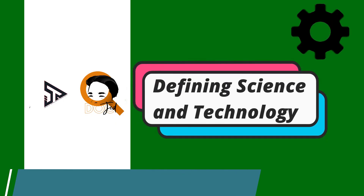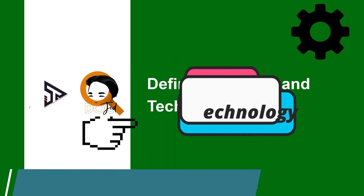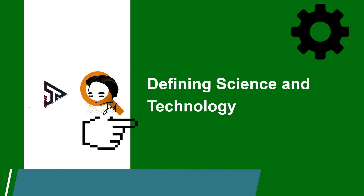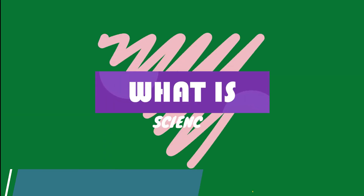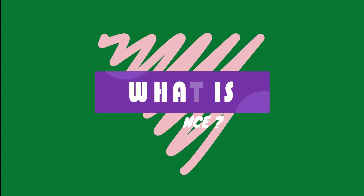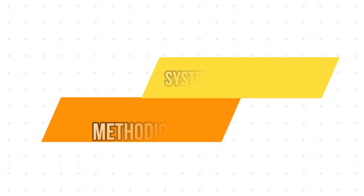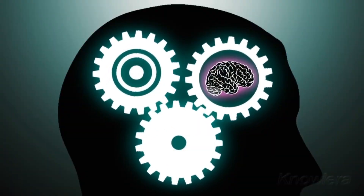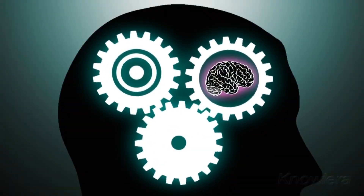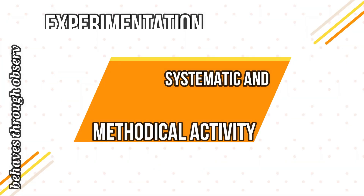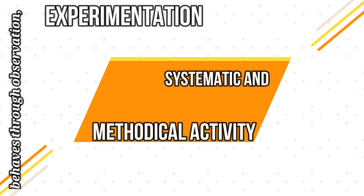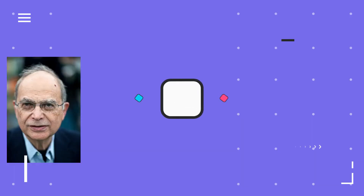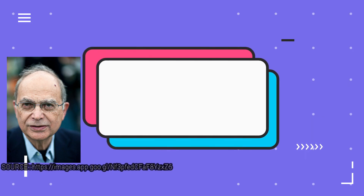Finding science and technology: what is science? It refers to a systematic and methodical activity of building and organizing knowledge about how the universe behaves through observation, experimentation, or both — according to the famous American science historian John Heilbronn.